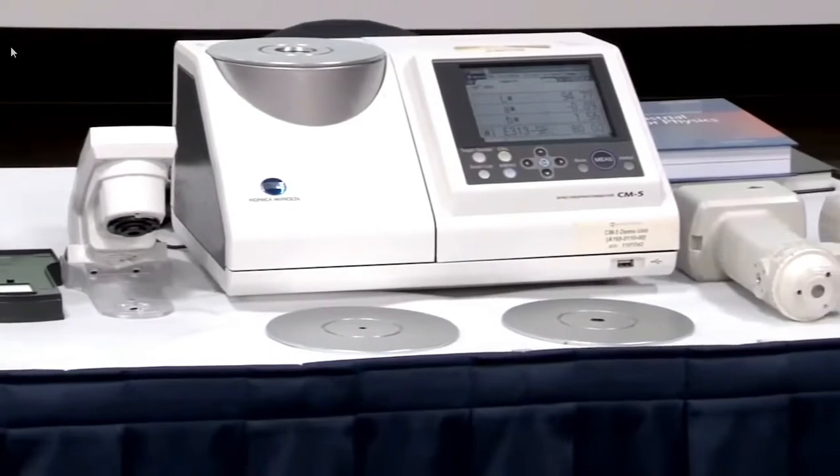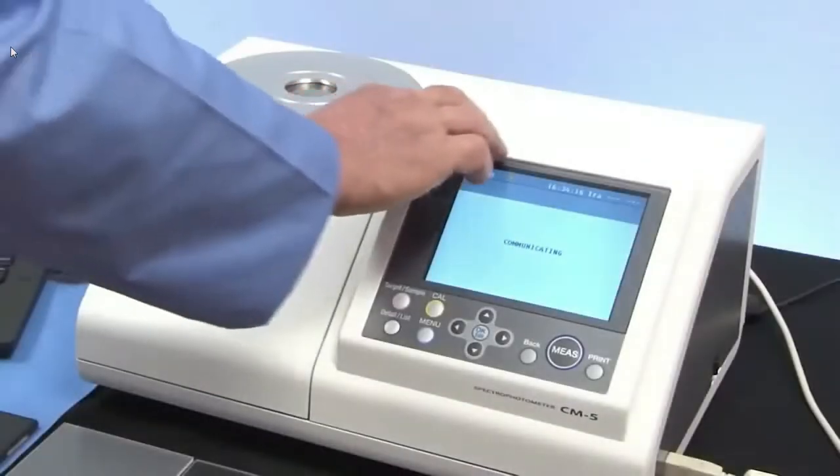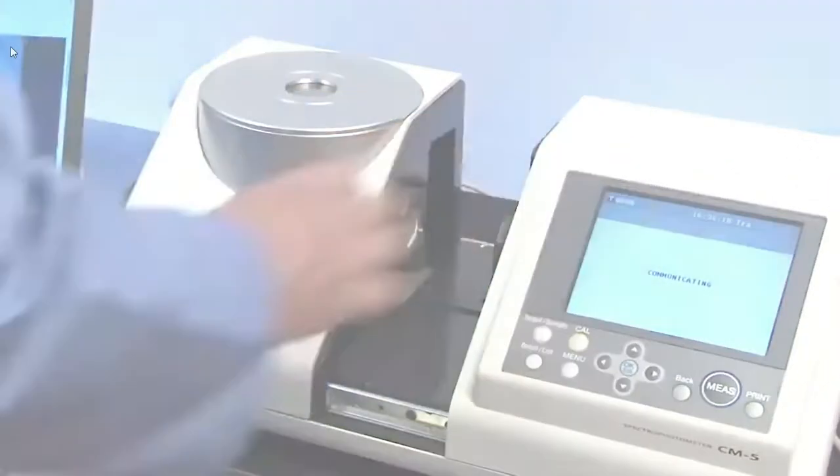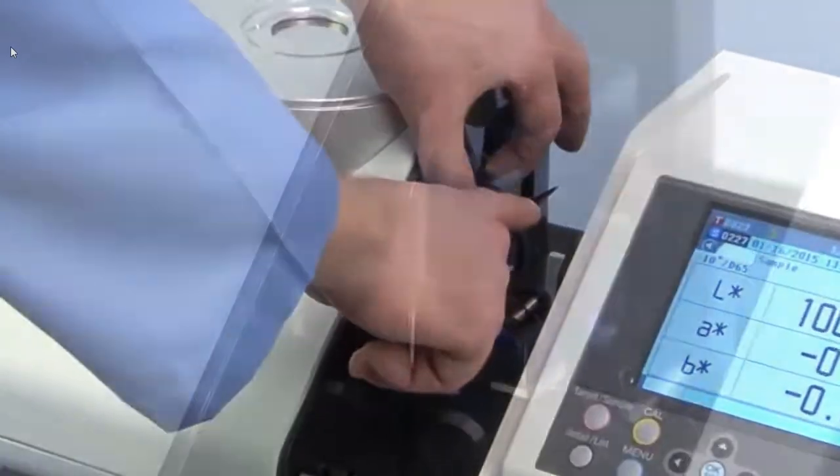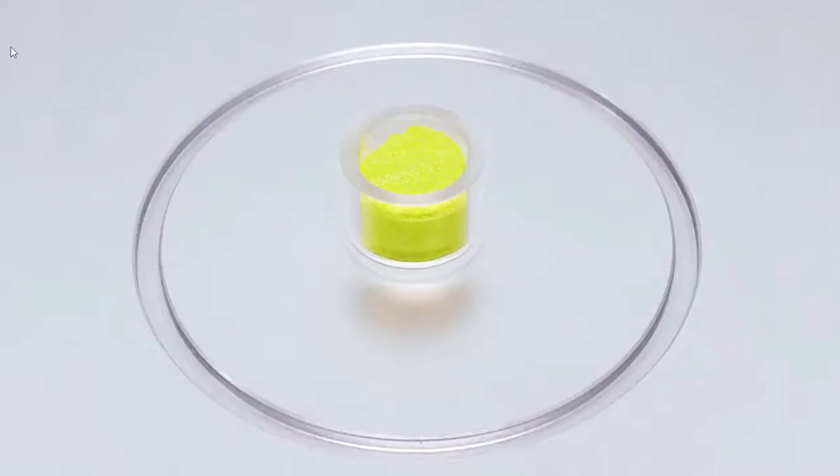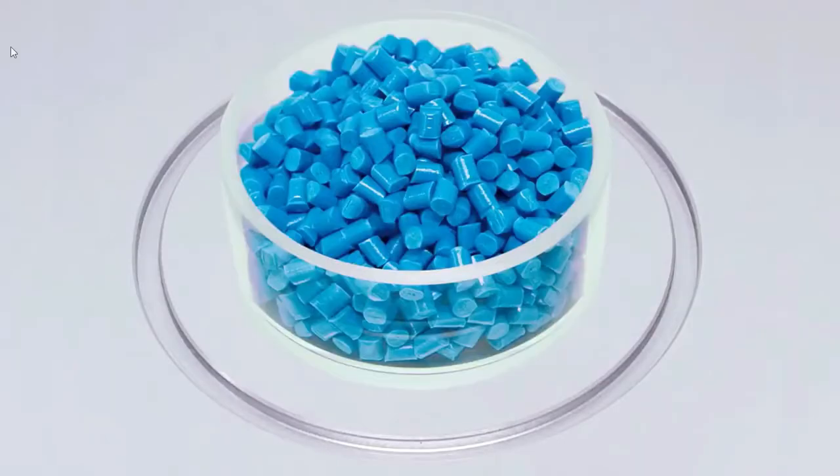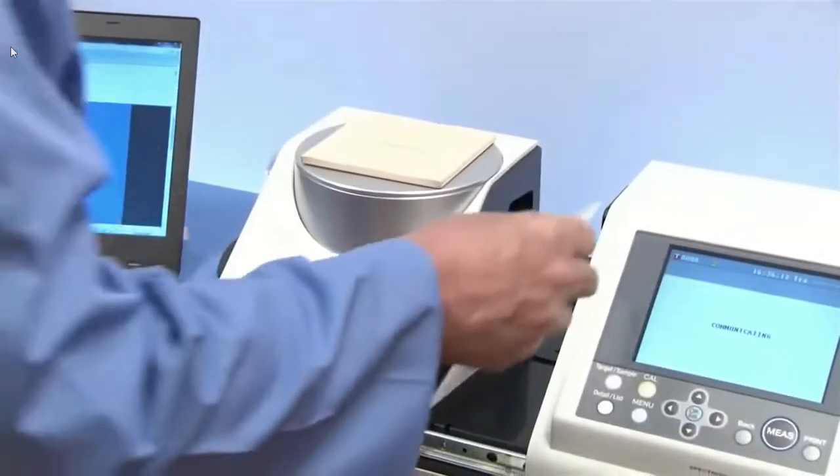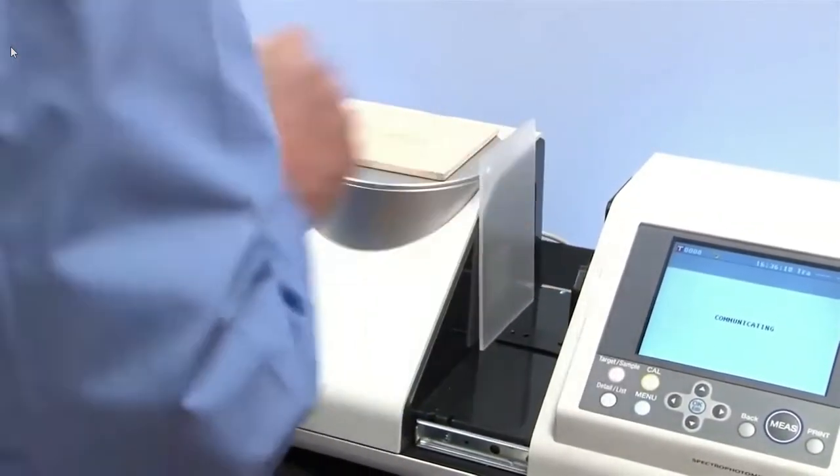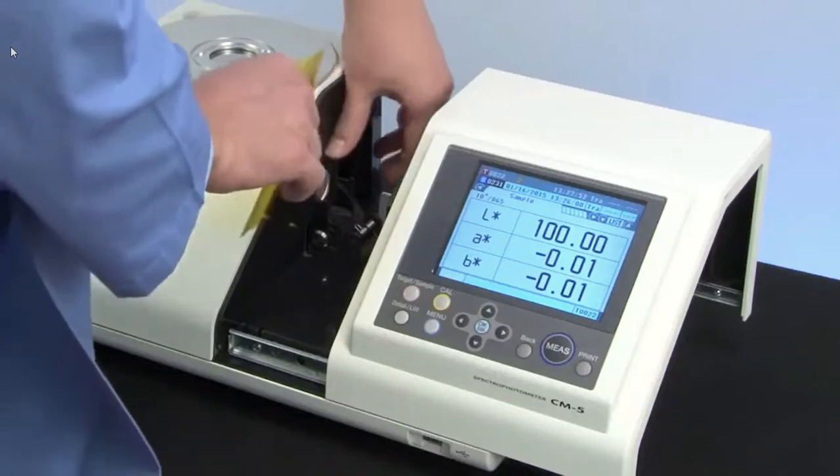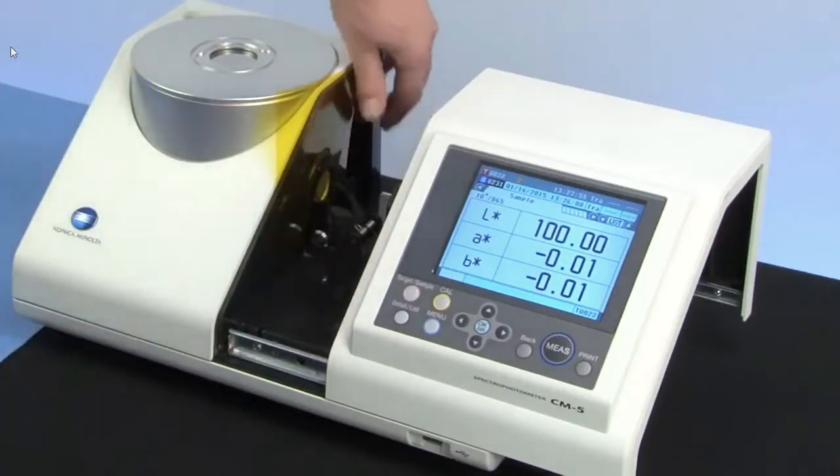The CM5 measures a variety of samples with different material characteristics, such as liquids, powders, paste, and granules, as well as the haze of transparent films and glass. The transmittance chamber can hold large sheets up to 60 millimeters thick.